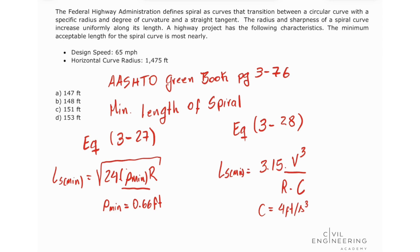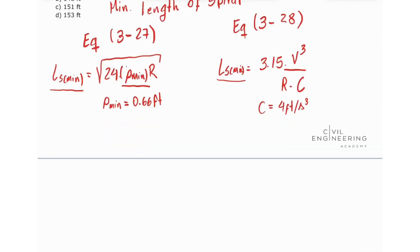So we're going to calculate the length of the spiral for both of these equations. And our L_s minimum should be the largest between these two. So let's go ahead and calculate for equation 3-27. So we have that our L_s minimum will be the square root of 24 times 0.66 times 1475, and this is equal to 152.85 feet.